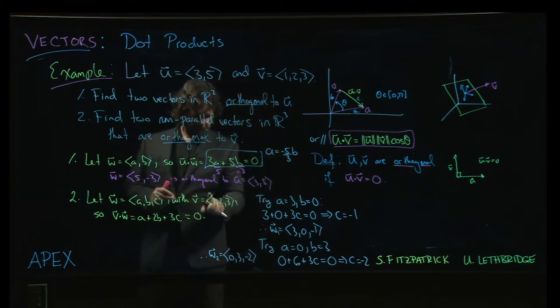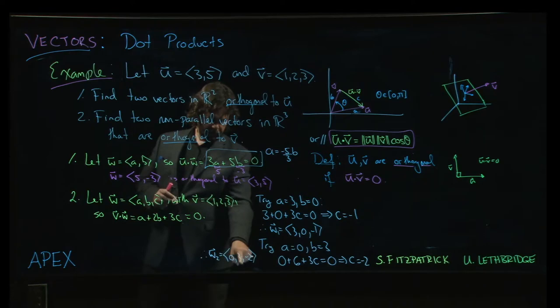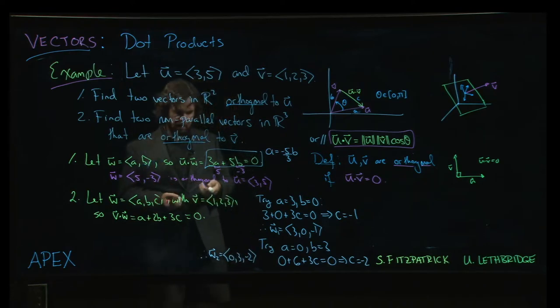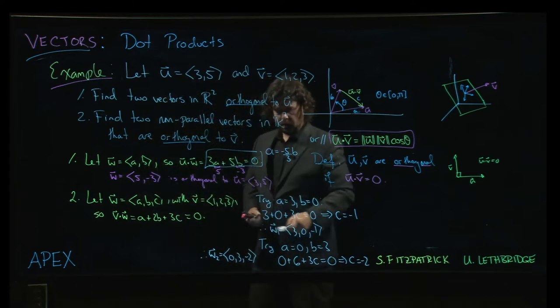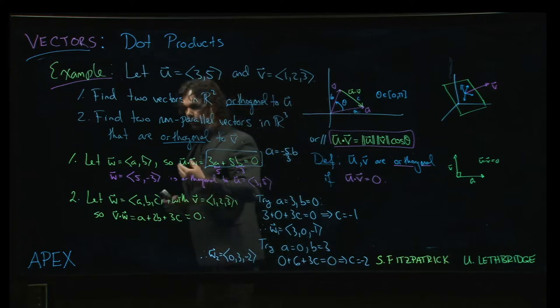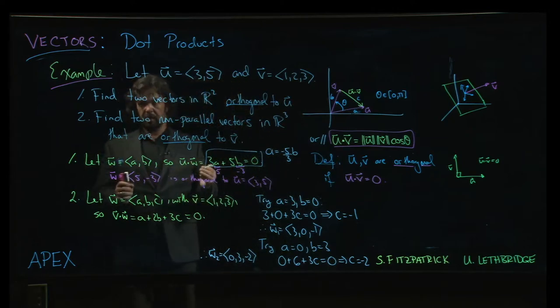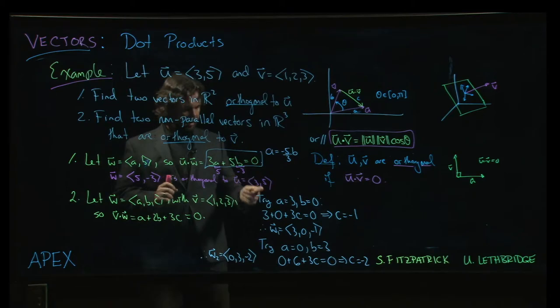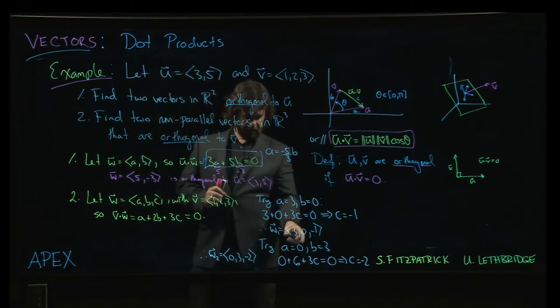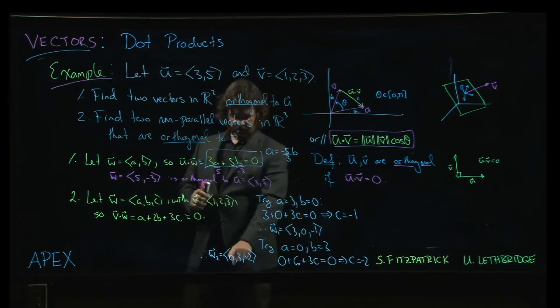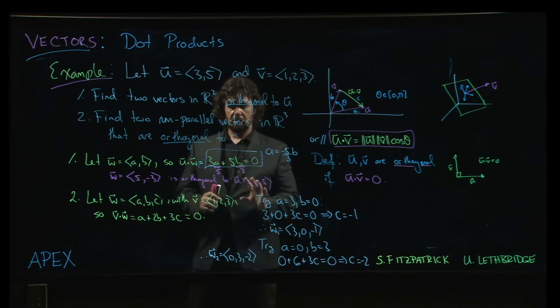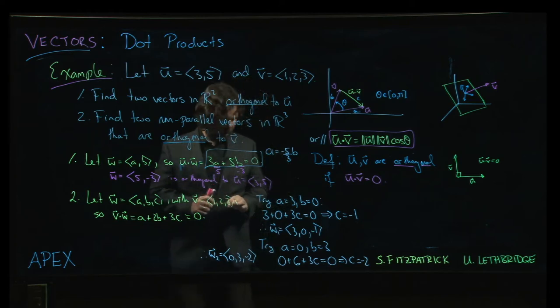Again we can check with the dot product: 1 times 0 is zero plus 6 minus 6, we get zero for the dot product. So that checks out, it is orthogonal. And these two vectors, they're definitely not parallel. Remember that for vectors to be parallel one has to be a scalar multiple of the other, and there's no way that's going to happen here. There's no common factor or multiple that I can use to multiply each of these numbers and end up with those. In particular, the fact that we have the zero in different spots is definitely going to rule that out for us.